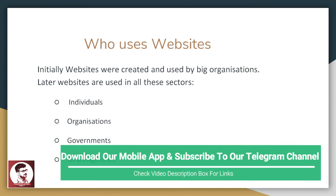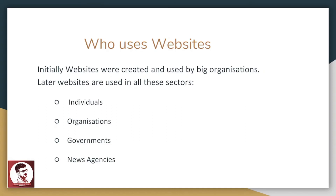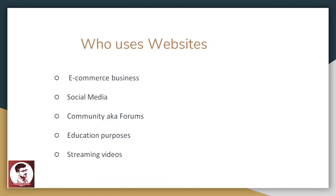Who uses websites? Individuals, organizations — that is governments. All governments mainly use websites and have their own websites. News agencies like BBC and CNN have their own websites. Next, e-commerce businesses like Amazon and Flipkart — whatever it is, they have online shopping. In the corona time, people don't go to shops — that is e-commerce business.